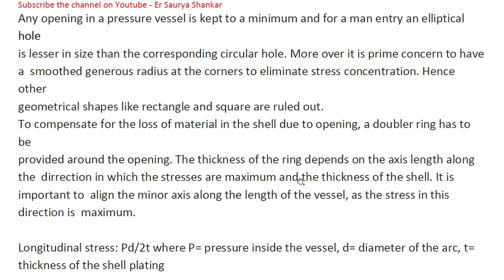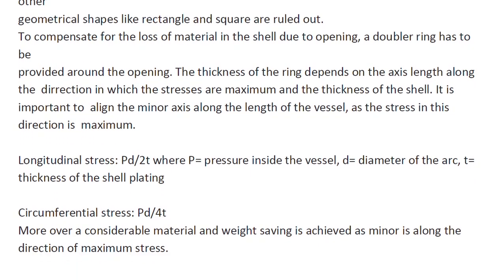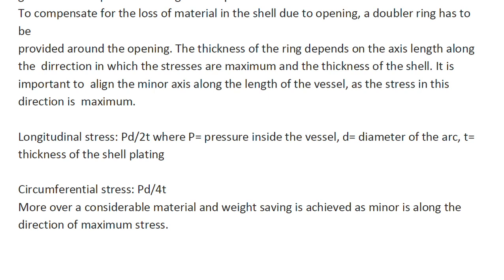The thickness of the ring depends on the excess length along the direction in which the stresses are maximum and the thickness of the shell. It is important to align the minor axis along the length of the vessel, as the stress in that direction is minimum. Longitudinal stress is pd/2t and circumferential stress is pd/4t, where p is the pressure inside the vessel, d is the diameter, and t is the thickness of the shell plating. A considerable material and weight saving is achieved with the minor axis along the direction of maximum stress.